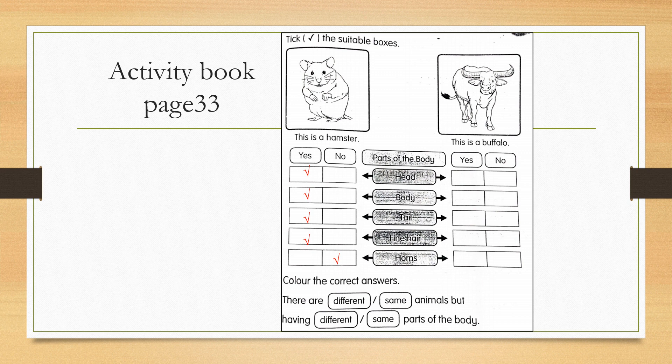Page 33. Tick the suitable box. This is a hamster. This is a buffalo. Parts of the body. Head. Hamster has head. Body. Tail. Fine hair. But no horns.